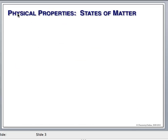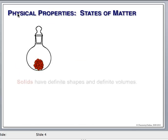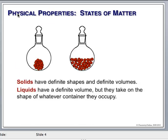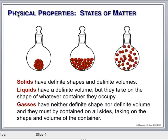When we have a solid, they have defined shapes and defined volumes. When we have a liquid, we know they have a defined volume but they take on the shape of their container. A gas, on the other hand, has neither a defined shape nor volume, and it will take on the shape and volume of whatever container we're in. We're dealing here with gases, so that's what we're going to talk about.